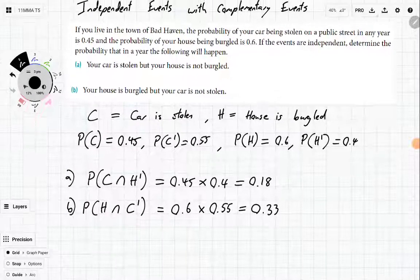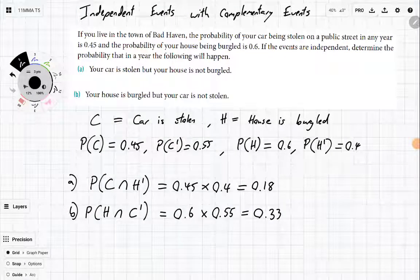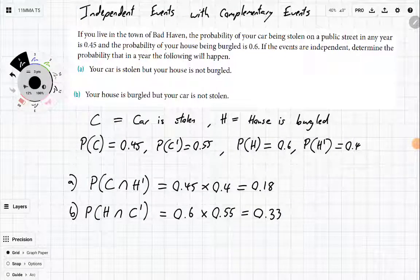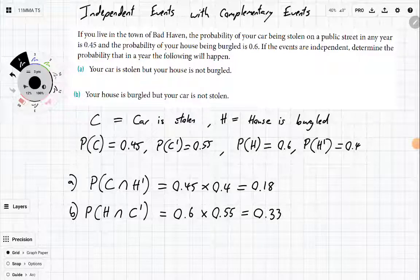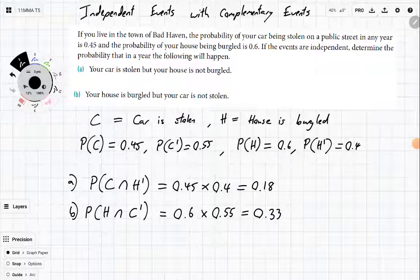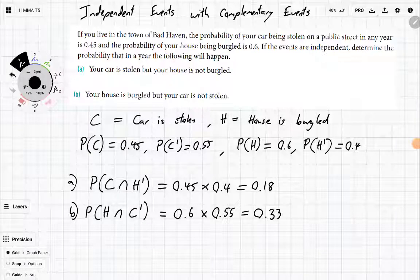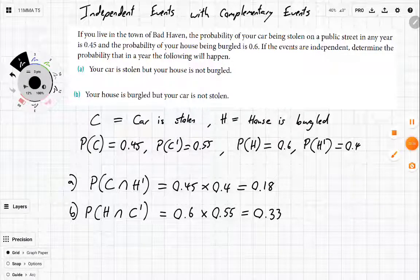And there we go. That's how easy it can be once we know that the events are independent. And because these are all complementary events, it means figuring out its partner is as easy as finding what adds up to one. See you in the next one. Goodbye.